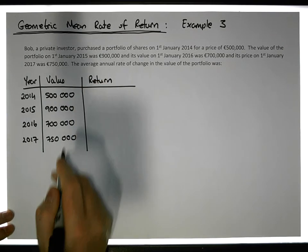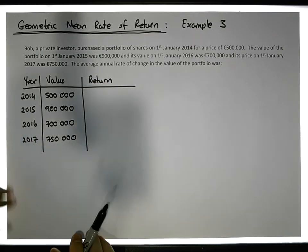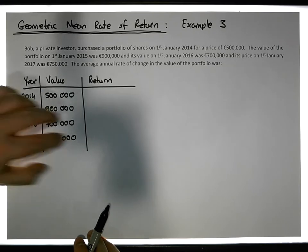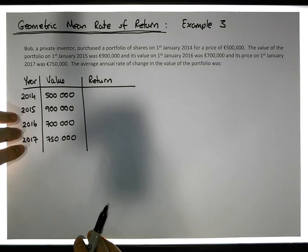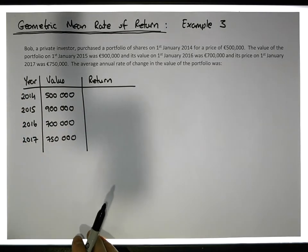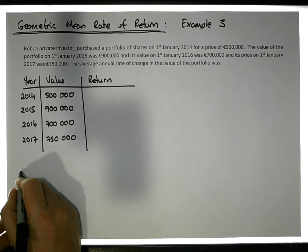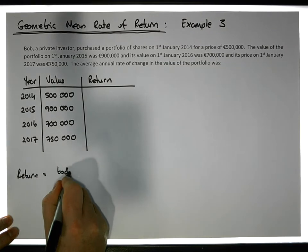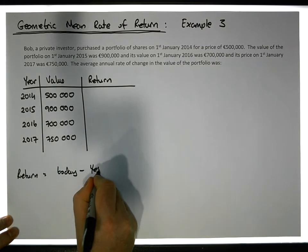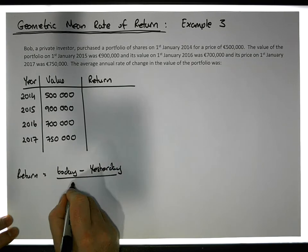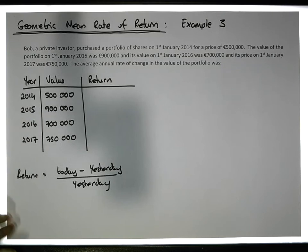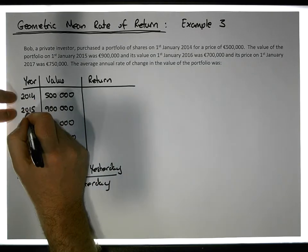Now we want to calculate the returns that were achieved across each one of these years — what return was achieved going from 2014 to 2015, from 2015 to 2016, and from 2016 to 2017 — so there are three possible returns. And don't forget: to calculate the return, the return is simply equal to today's price minus yesterday's, divided by yesterday's.